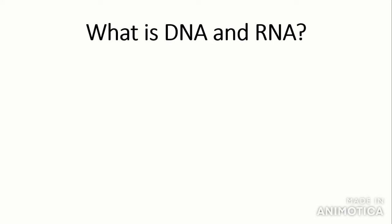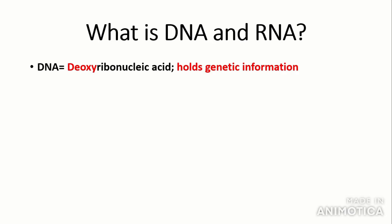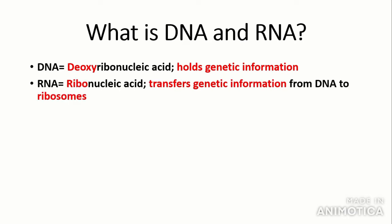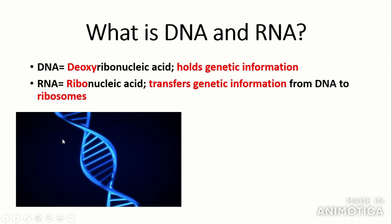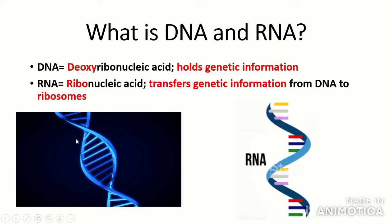First, a brief introduction to what DNA and RNA are. DNA stands for deoxyribonucleic acid and its basic job is to hold genetic information that codes for proteins. RNA is ribonucleic acid and its job is to transfer genetic information from DNA to ribosomes. Interestingly, ribosomes are partly made of RNA as well. DNA has a double helix shape, and RNA is like a single helix.